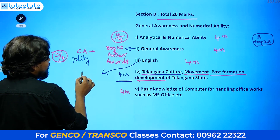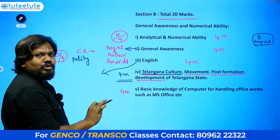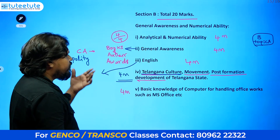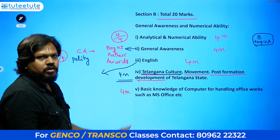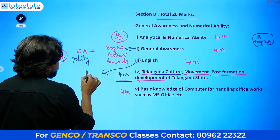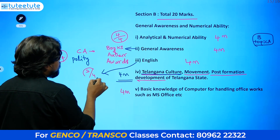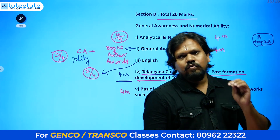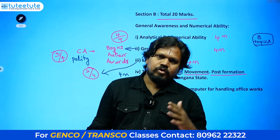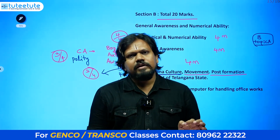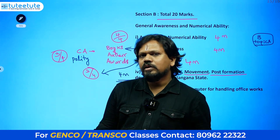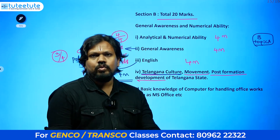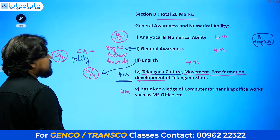In English, you will be getting at least 2 out of 4 correct. Since there is no negative marking, attempt all questions. You may get more than 2 if you are lucky, but target at least 2 answers properly. The minimum target for English is 2 out of 4.